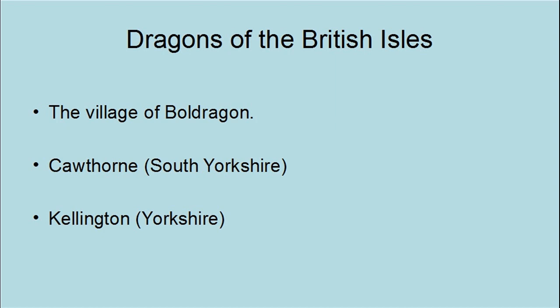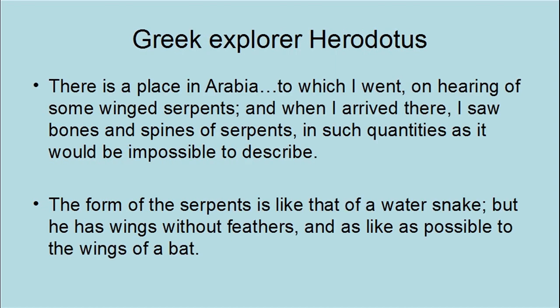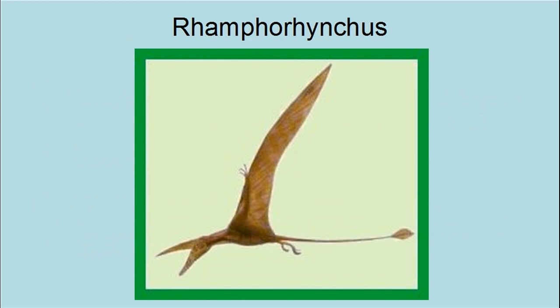The Greek philosopher Herodotus described small flying reptiles in ancient Egypt and Arabia that sound amazingly like the Rhamphorhynchus pterodactyl. His account is as follows: 'There is a place in Arabia to which I went on hearing of some winged serpents. And when I arrived, I saw bones and spines of serpents in such quantities as it would be impossible to describe. The form of the serpent is like that of a water snake, but he has wings without feathers and as like as possible to the wings of a bat.' So they are described as having a snake-like body and bat-like wings of Rhamphorhynchus. Aristotle said that the existence of these creatures in Ethiopia was common knowledge.